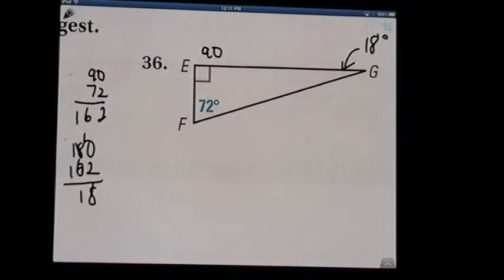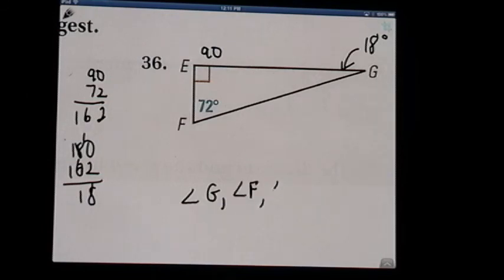And listing our angles in order, we've got from least to greatest, angle G, then angle F, then angle E. And listing our sides is EF, EG, and FG.